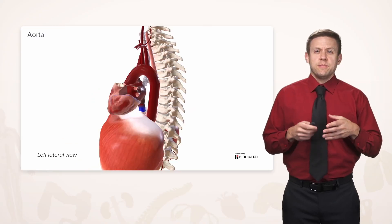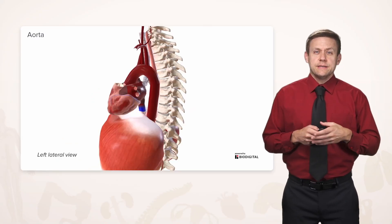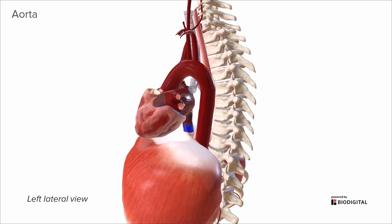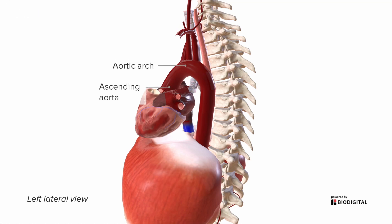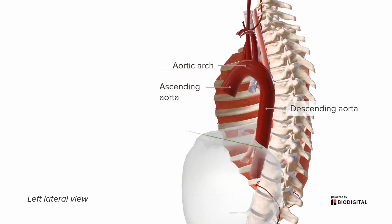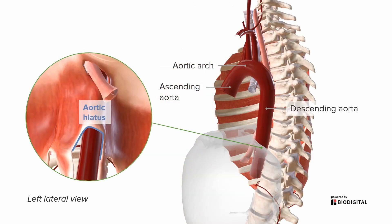Now let's take a look from the left side, where we can see our ascending aorta becoming an arch — the aortic arch — and then finally posteriorly becoming the descending aorta as it heads towards the abdomen. It's going to go through that hiatus, the aortic hiatus, in the diaphragm in order to reach the abdominal cavity.